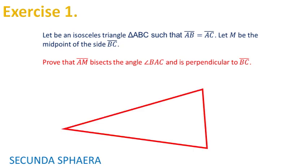First I'll draw an isosceles triangle. I'll label its vertices ABC. I will label the midpoint of the side BC and I'm going to connect the points A and M.